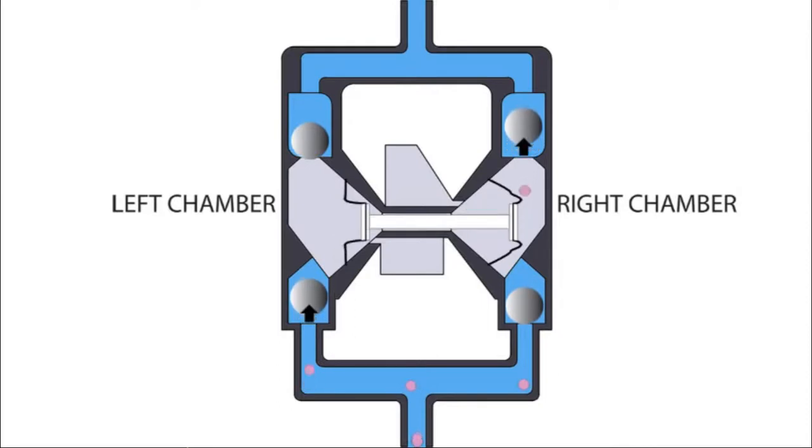When the pressurized right diaphragm reaches the limit of its discharge stroke, the air valve will direct pressurized air to the back of the left diaphragm. This begins the discharge stroke of the left diaphragm.